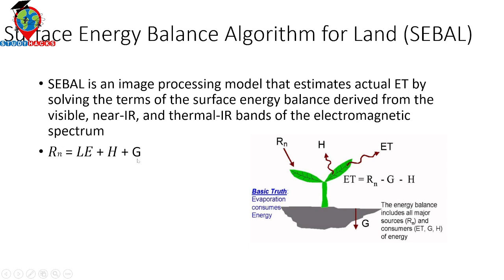From this energy balance equation, we can easily calculate ET. Evapotranspiration equals net radiation minus soil heat flux minus sensible heat flux. This is the SEBAL or Surface Energy Balance Algorithm, and it has wide applications in agricultural precision and hydrology, since evapotranspiration is a major parameter in the hydrological cycle.